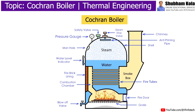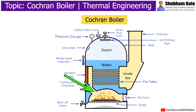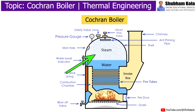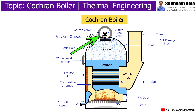In this video we are going to discuss about the construction and working of the Cochrane boiler, which is a fire tube boiler in which coal or gases is used as a working fluid for generating steam, and that steam is further used for generation of power.